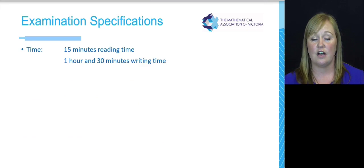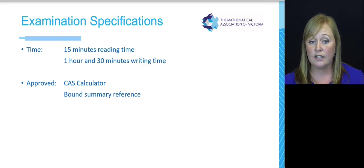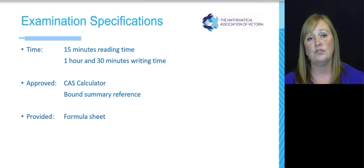The exam specifications. Each exam is 15 minutes reading time and an hour and 30 minutes writing time. You are allowed your CAS calculator and your bound summary reference in each of the exams. And you're also provided with a formula sheet. So make sure that you know exactly what's on that formula sheet. Most of the time, if you've got your bound summary reference set up properly, then you won't need to look at the formula sheet, but check that you've got everything.